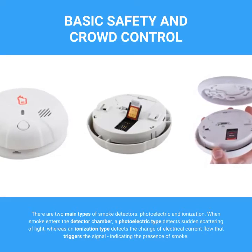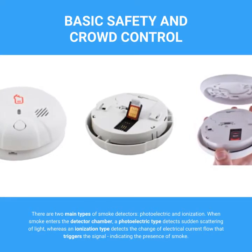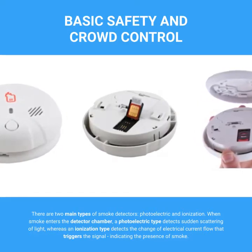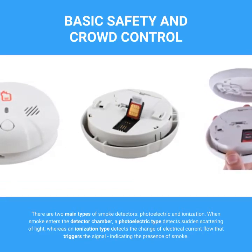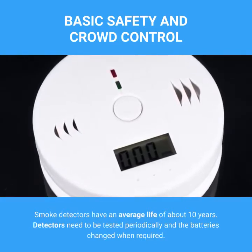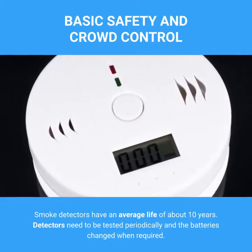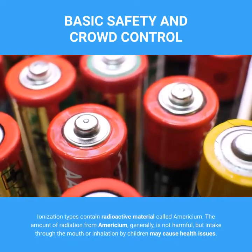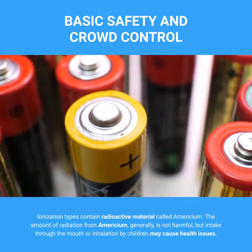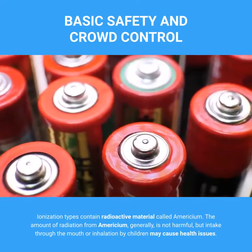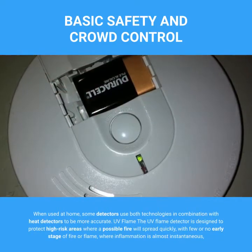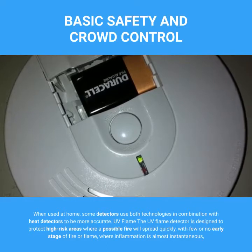When smoke enters the detector chamber, a photoelectric type detects sudden scattering of light, whereas an ionization type detects the change of electrical current flow that triggers the signal indicating the presence of smoke. Smoke detectors have an average life of about 10 years. Detectors need to be tested periodically and batteries changed when required. Ionization types contain radioactive material called americium; the amount of radiation is generally not harmful, but intake through the mouth or inhalation by children may cause health issues. When used at home, some detectors use both technologies in combination with heat detectors to be more accurate.